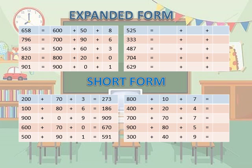The next one is 796. 7 is at the 100s place, 9 is in the 10s place, and 6 is in the 1s place. So the place value of 7 is 700, plus 9's place value is 90, plus 6 is in the 1s place so write 6. Some of the questions I have already shown you — do it accordingly.